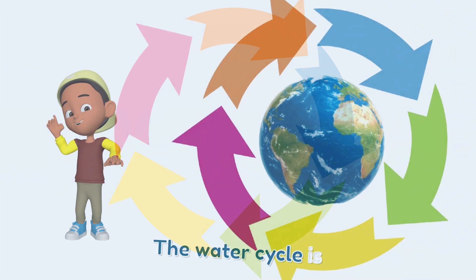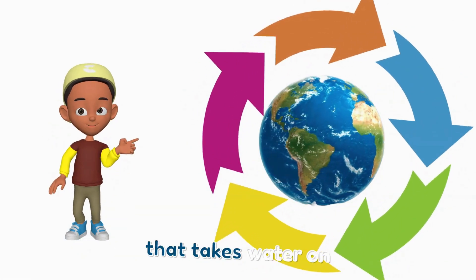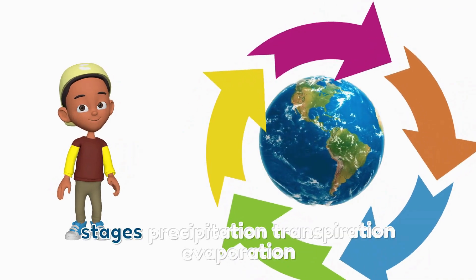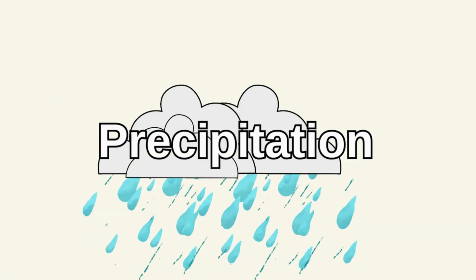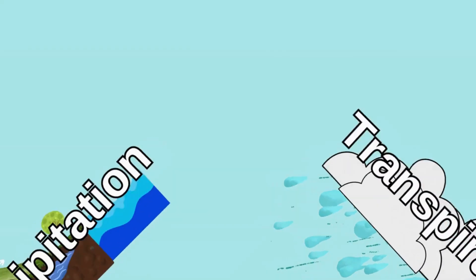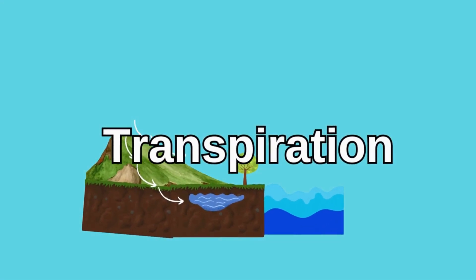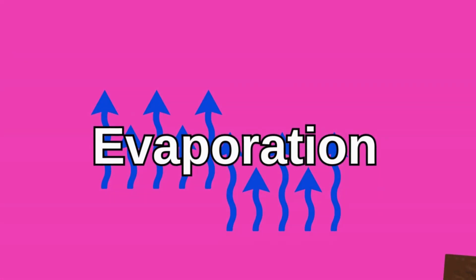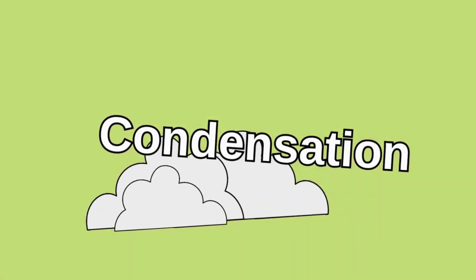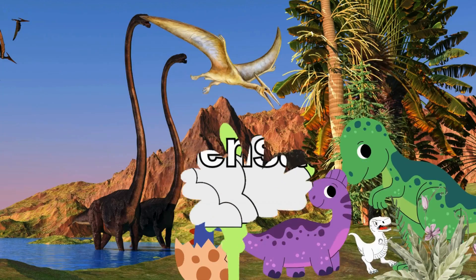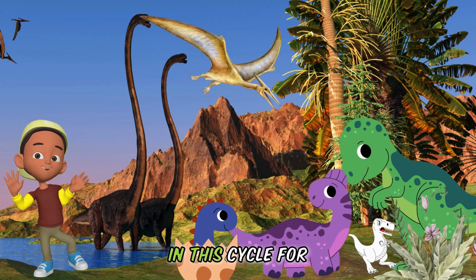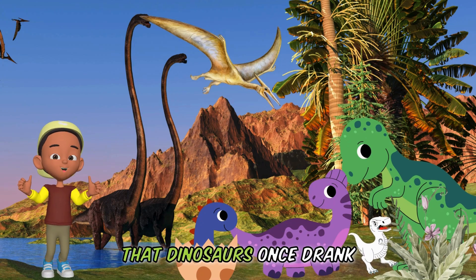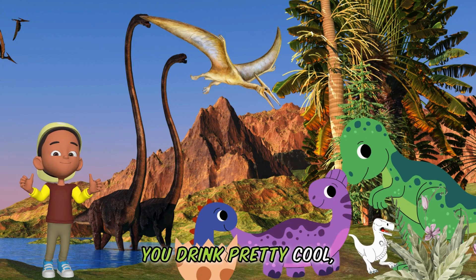The water cycle is like a never-ending merry-go-round that takes water on a journey all around the earth. It involves four main stages: precipitation, transpiration, evaporation, and condensation. And water has been in this cycle for billions of years — and who knows? It's possible that dinosaurs once drank the same water you drink. Pretty cool, right?